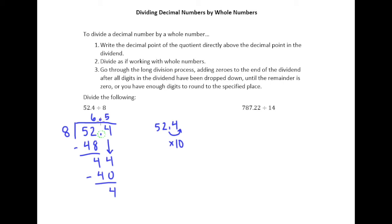Because timesing by 10 would have moved that decimal over. So in reality, our quotient so far should be 6.5.